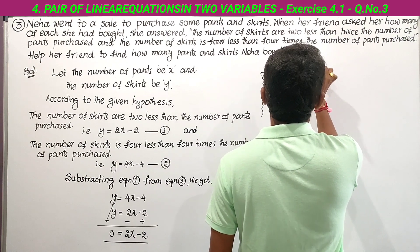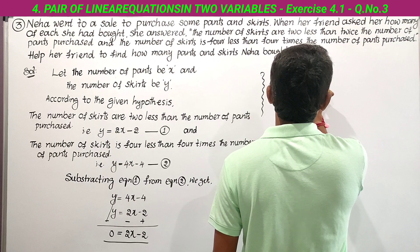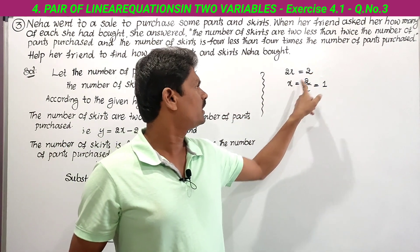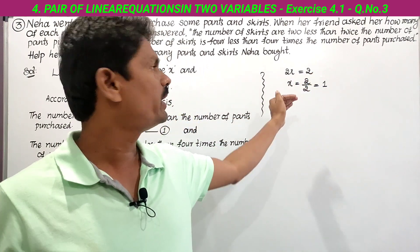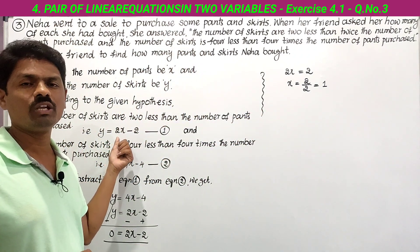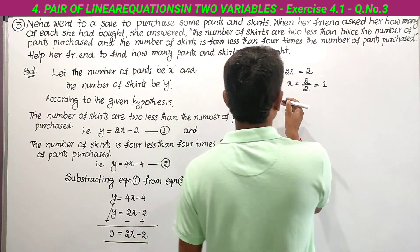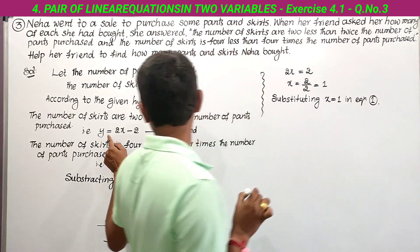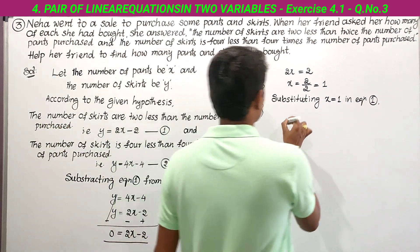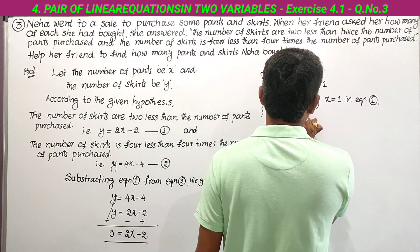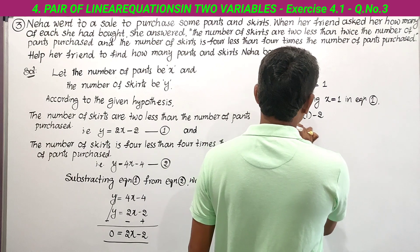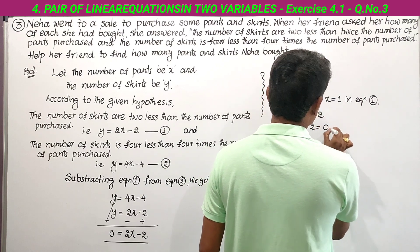Taking 2 to the right side: x = 2/2 = 1. Now substitute x = 1 into Equation 1. Equation 1 is y = 2x − 2. Substituting x = 1: y = 2 × 1 − 2 = 2 − 2 = 0.